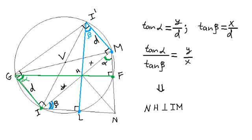We can also easily see that quadrilateral GI'MI is the rectangle. Because its two diagonals are diameters. So that its two opposite sides GI and I'M have the same length. Which we denote with small letter D. Then we can write tangent alpha equals Y over D. And tangent beta is X over D. From which it follows that tangent alpha divided by tangent beta equals Y over X. Which proves that straight line segment NH is perpendicular to segment IM.